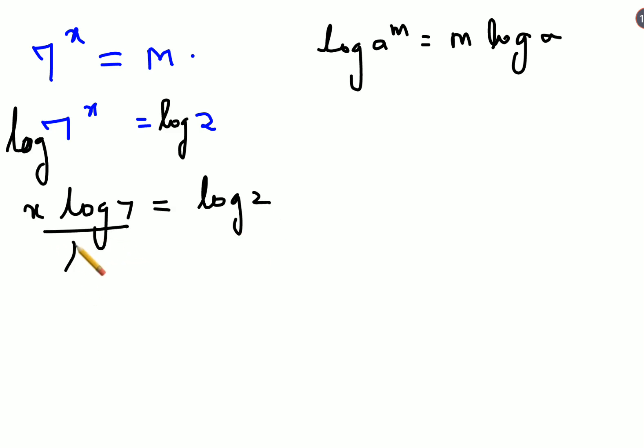So in order to find the value of x you will divide both sides by log 7. So this gets cancelled and x equals to log 2 upon log 7.